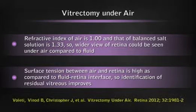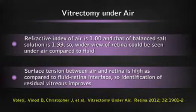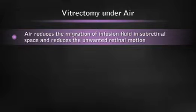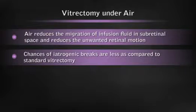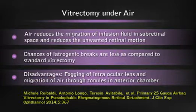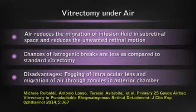The surface tension between air and retina is high as compared to the fluid-retina interface, and so identification of the residual vitreous improves under air. Additionally, air also reduces the migration of infusion fluid into the sub-retinal space. The chances of iatrogenic breaks under air are also reduced as compared to standard vitrectomy. The disadvantages of under-air vitrectomy include fogging of the intraocular lens during surgery if a posterior capsular lens is present, and migration of the air through the zonules into the anterior chamber.